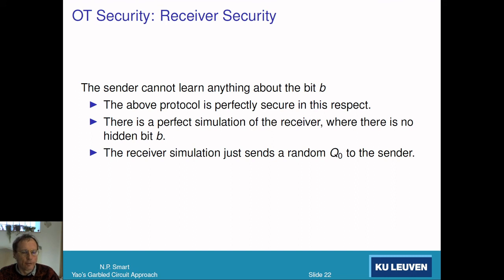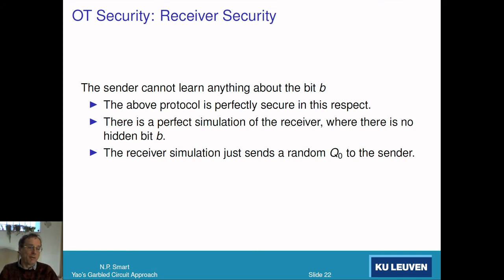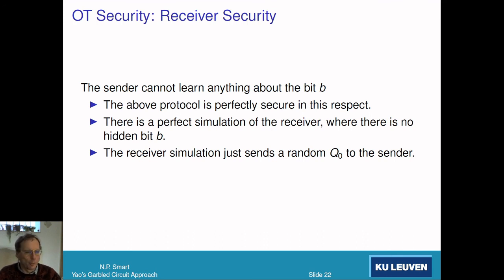Receiver security is much easier. Security for the sender means the sender should not learn anything about the bit b. If you think about it, there is a perfect simulation: all the receiver ever sends to the sender is a random value Q_0, and we can simulate that perfectly by just sending a random value. So we have perfect security from the sender's point of view regarding b. That covers OT security, and later we'll combine these into Yao's protocol for two-party computation.